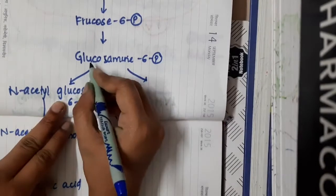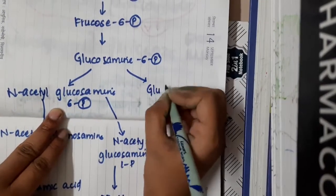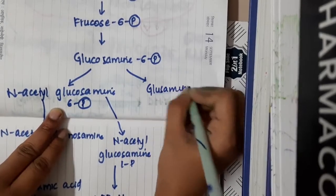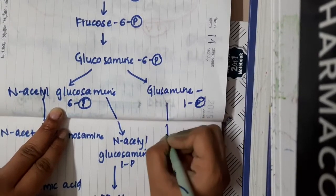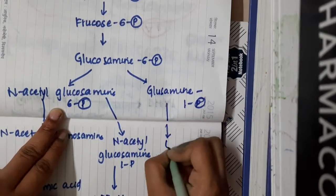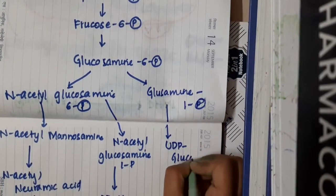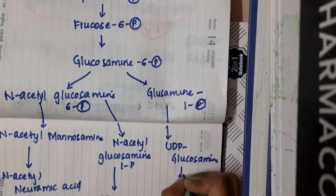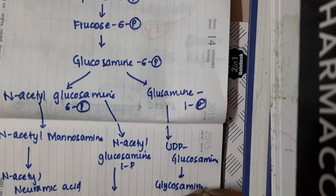This glucosamine-6-phosphate, again in the presence of isomerase, forms glucosamine-1-phosphate, which combines with UTP to form UDP-glucosamine, which can be used in the synthesis of glycosaminoglycans.